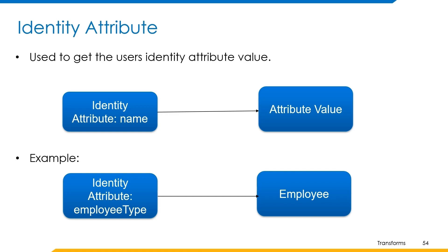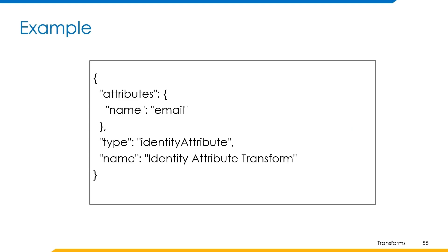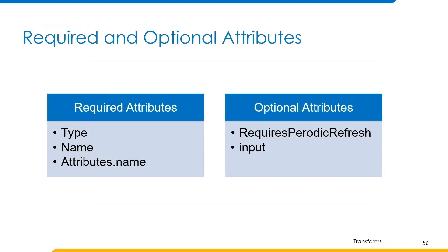Now let's understand how to build a transform using this operation. The example can be built in this format where the name of the transform is identity attribute transform and type is identity attribute. We are trying to find the value for the identity attribute email, so we give email to the name attribute and its corresponding value is returned as output. The required attributes are type, name, and attribute name. The optional attributes are requires periodic refresh and input.